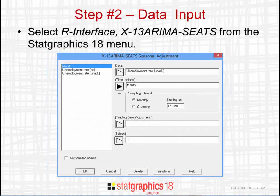Once R is installed, you can load your data into the StatGraphics 18 data sheet. Then go to the main menu, look for R Interface, and select X13 ARIMA SEATS.